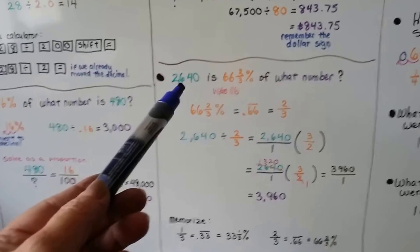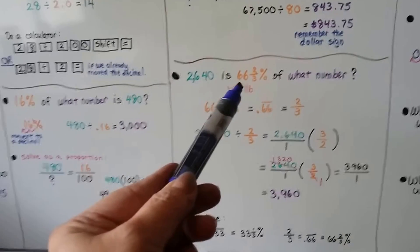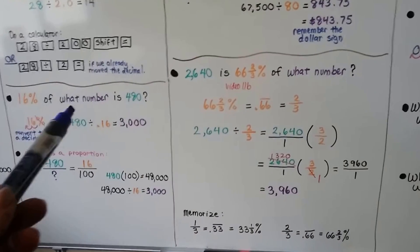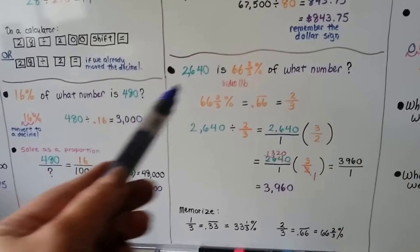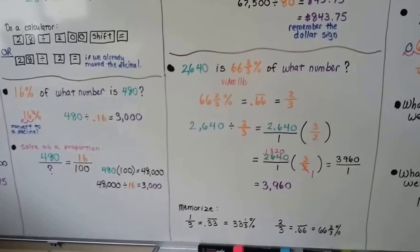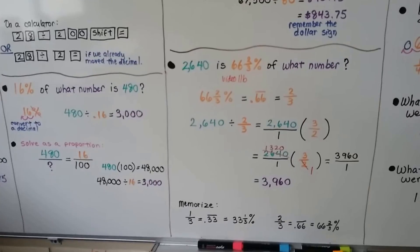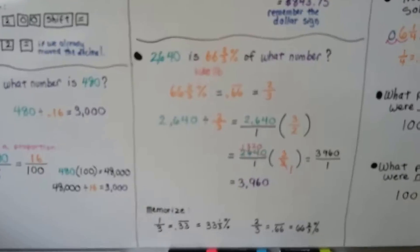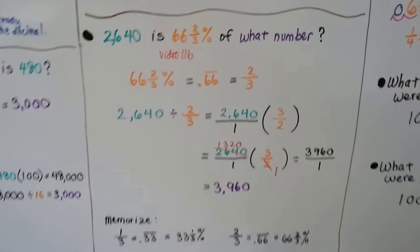It says 2,640 is 66 and two-thirds percent of what number? And over here it says 16% of what number is 480. It's asking the same thing. It's just written differently. It still wants the base. It still wants that other number. So it's really important to be able to identify these.